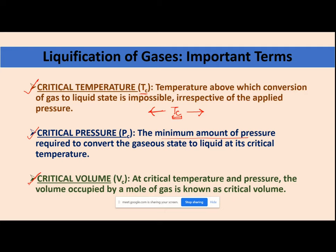To summarize: critical temperature is the temperature above which you cannot convert a gas to liquid form, and above which the liquid state cannot exist. Critical pressure is the minimum amount of pressure required to convert the gas state to liquid at critical temperature. Critical volume is the volume occupied by one mole of gas when critical temperature and pressure are both attained.